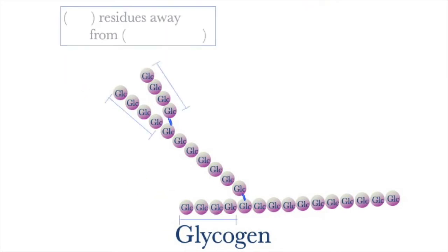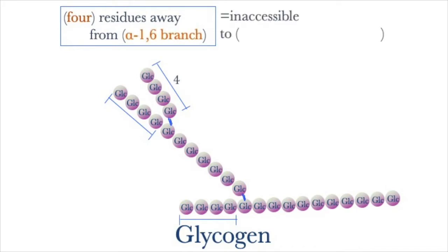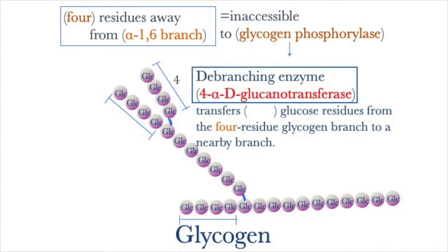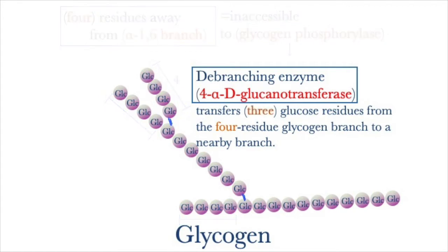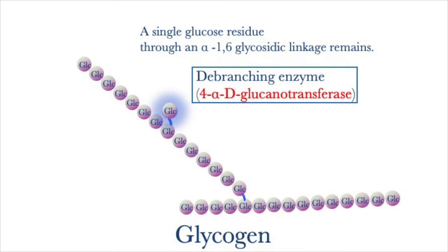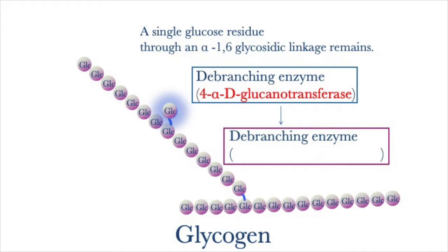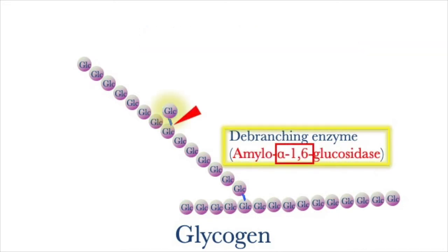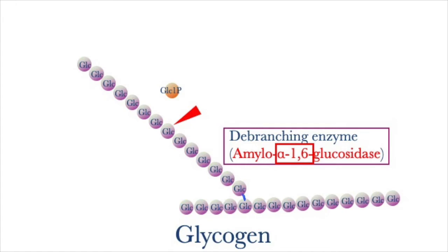When a glycogen branch is degraded down to four residues away from an alpha-1,6 branch point, it is inaccessible to glycogen phosphorylase. At this point, 4-alpha-glucanotransferase is used. It transfers three glucose residues from the four-residue glycogen branch to a nearby branch. However, a single glucose residue linked via an alpha-1,6 glycosidic linkage remains. Amylo-alpha-1,6-glucosidase clips the remaining alpha-1,6 linkage, producing free glucose and linear unbranched glycogen.